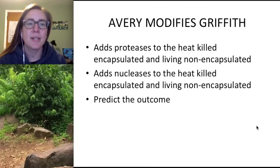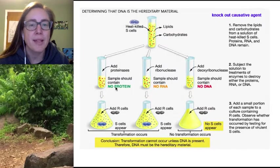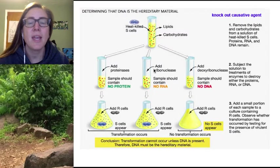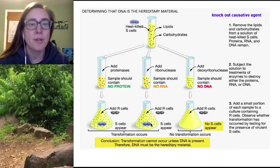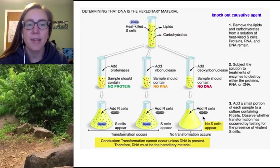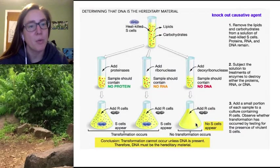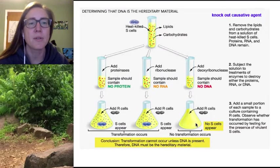He then predicted the outcome. What he found was that if proteases were added and the sample contained no protein, transformation still occurred. If he added ribonuclease to destroy RNA, transformation again still occurred. It wasn't until he added deoxyribonuclease, which destroyed the DNA, that transformation did not happen. This provided significant evidence that DNA is the transforming factor and the source of heredity — how information can be passed from parent to offspring, or in this case, bacteria cell to bacteria cell via horizontal gene transfer.